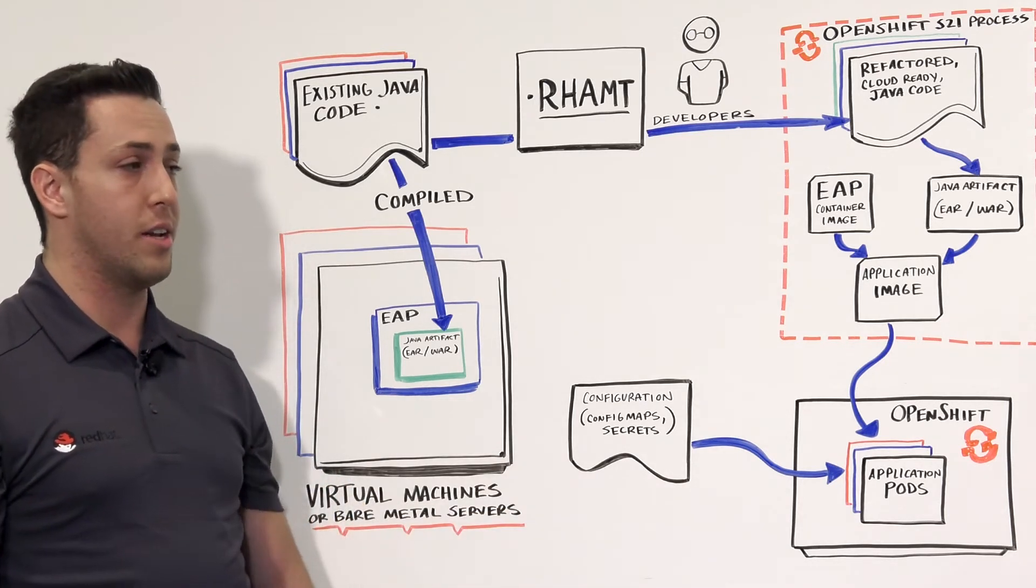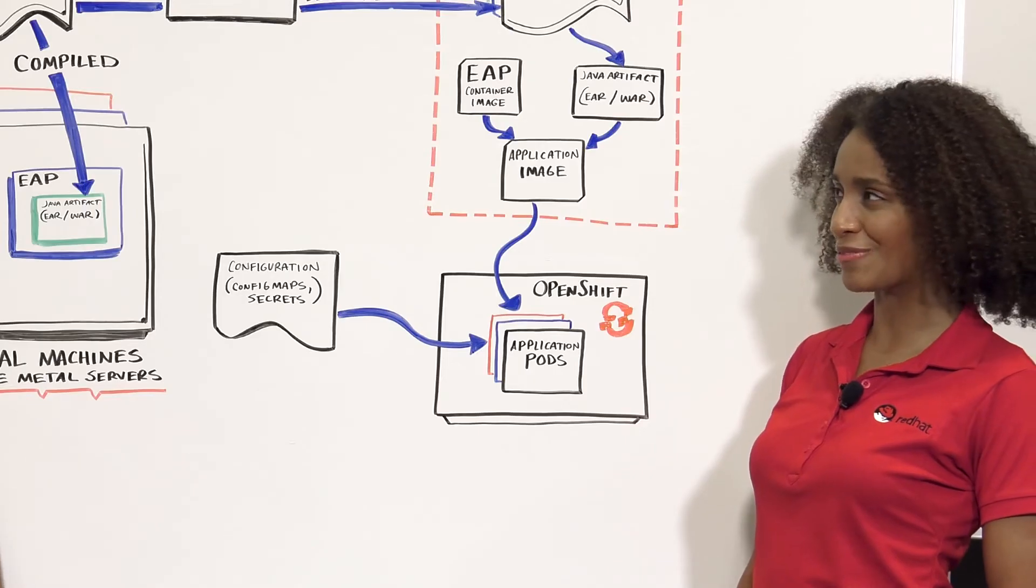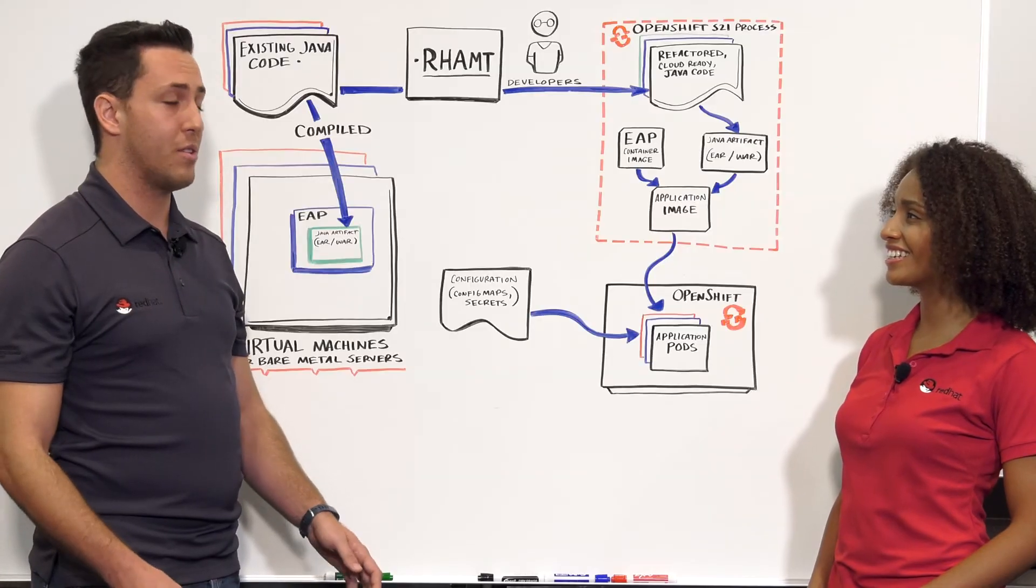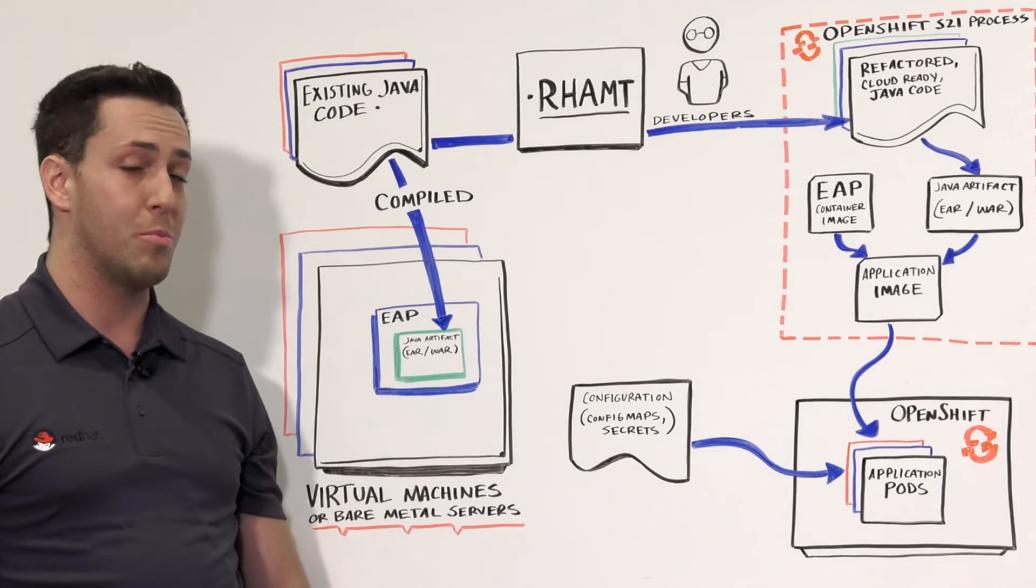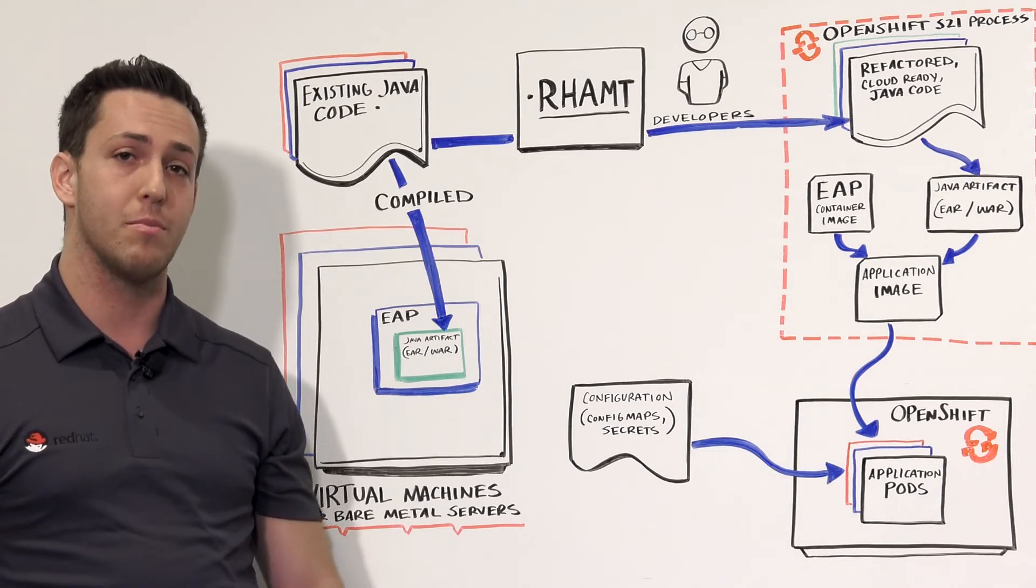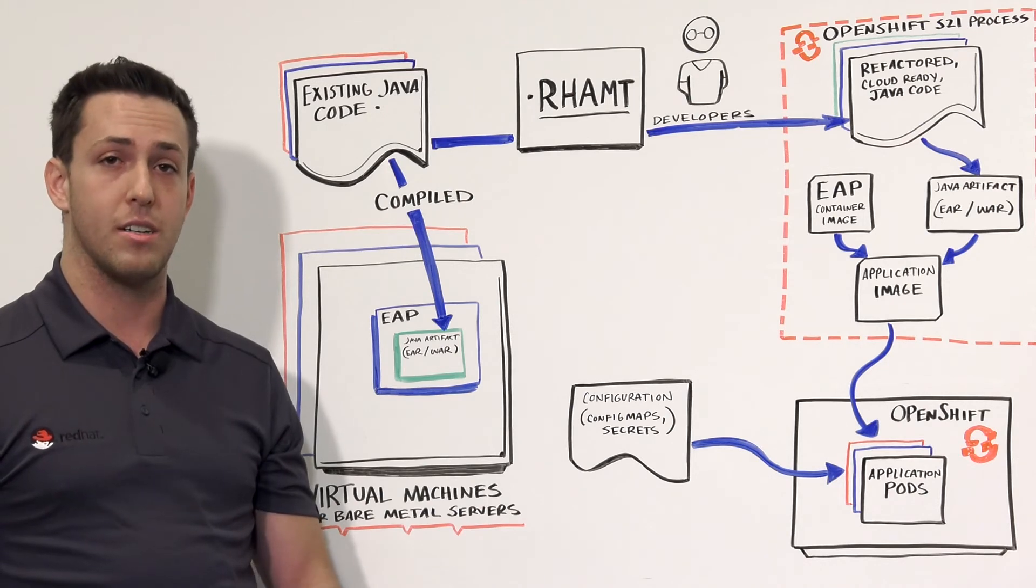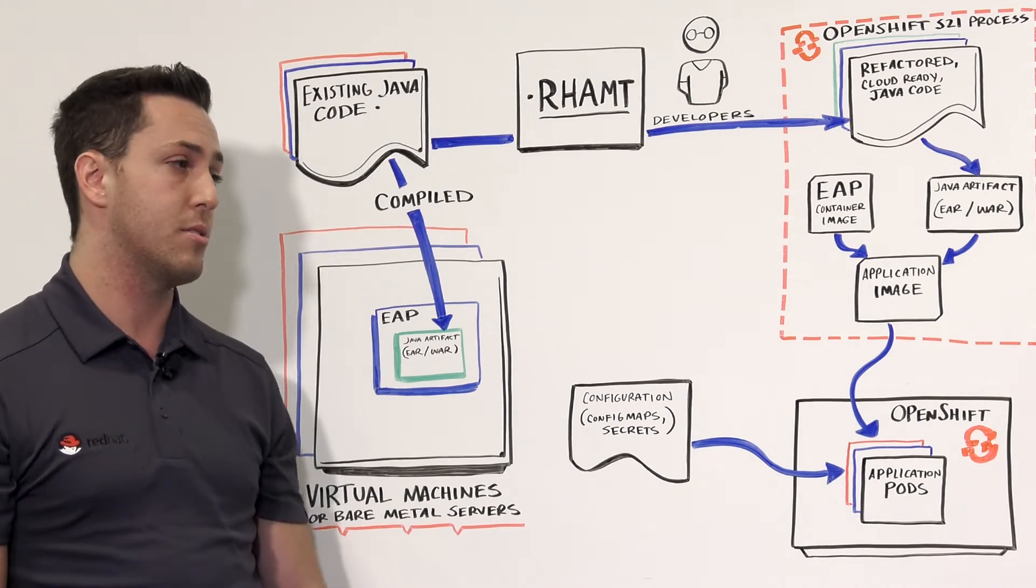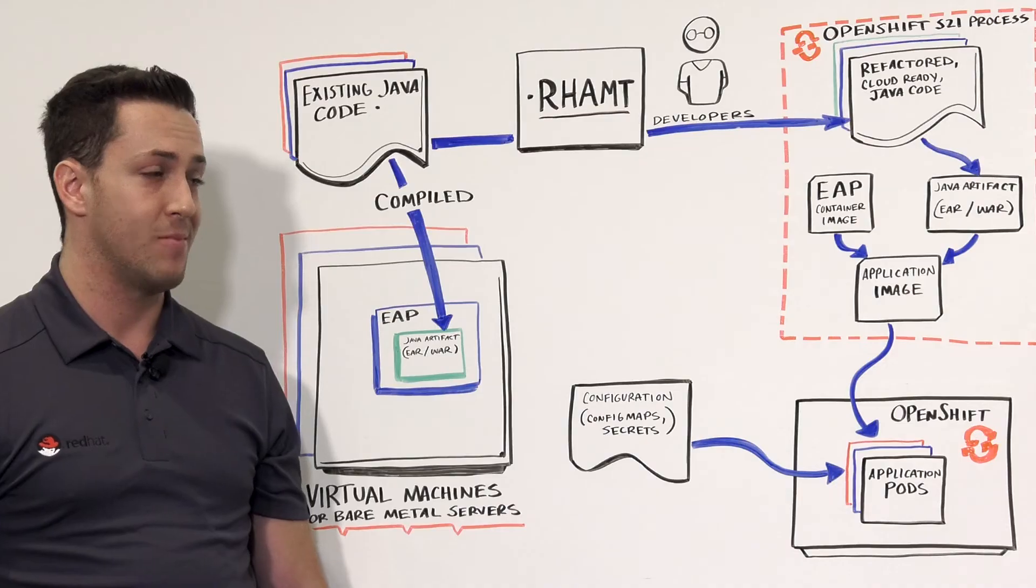Besides those benefits, do you want to hear another benefit of OpenShift, one that I think is very big and very scary to tackle? Sure, tell me. Have you or anyone you've ever known broken production due to pushing code that didn't belong in that environment? Well, OpenShift ensures this doesn't happen by allowing developers to spin up pods identical to production. Therefore, there are no environmental issues. That is an amazing feature. I can't ever imagine breaking production.